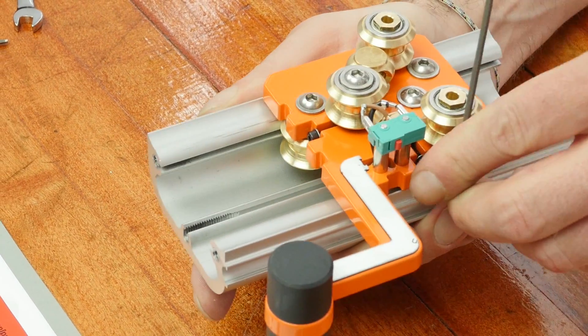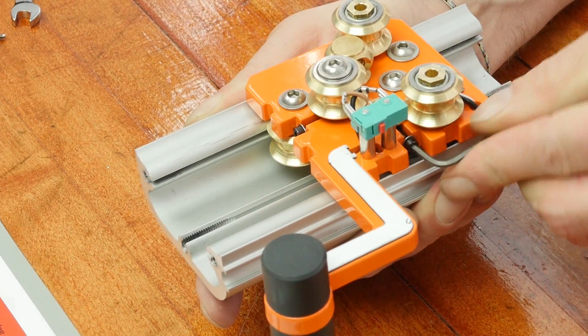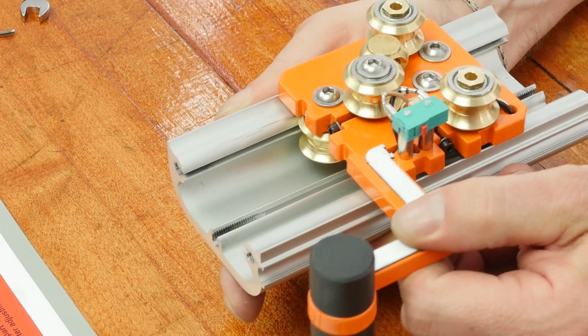Once all the play has been removed, tighten the screw an additional 90 degrees. This is the correct tension.